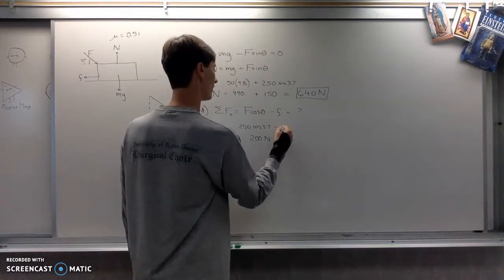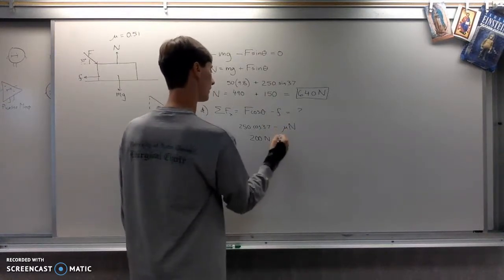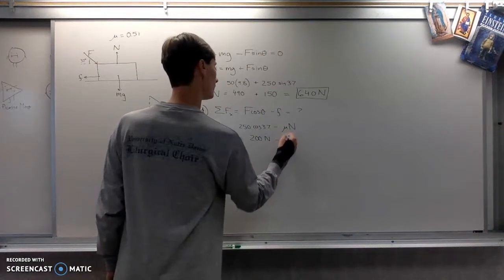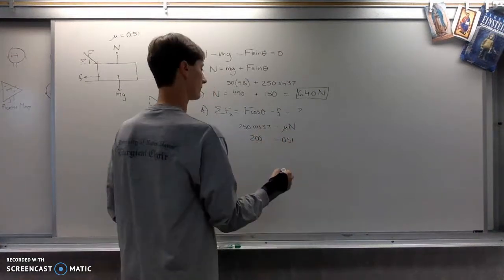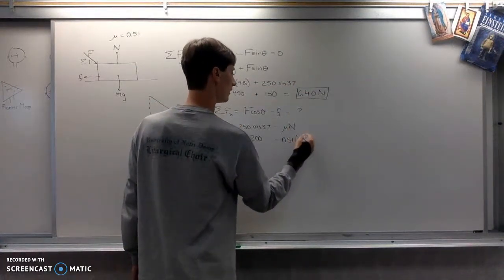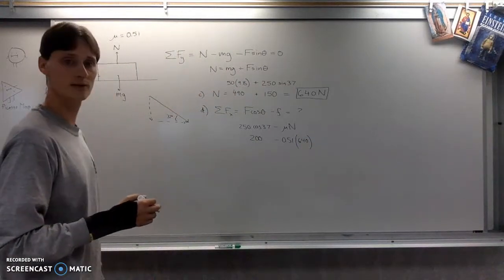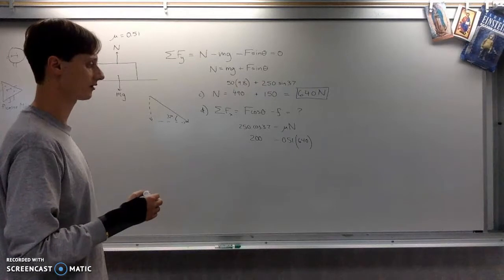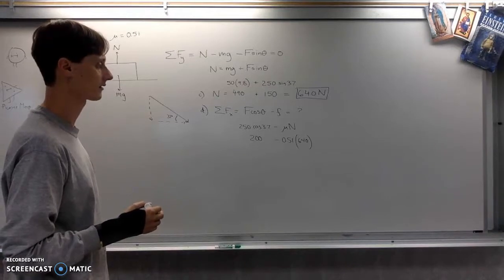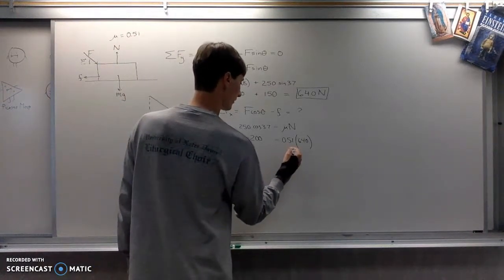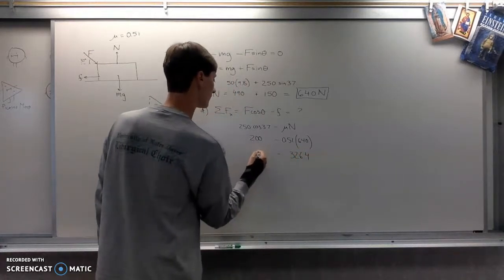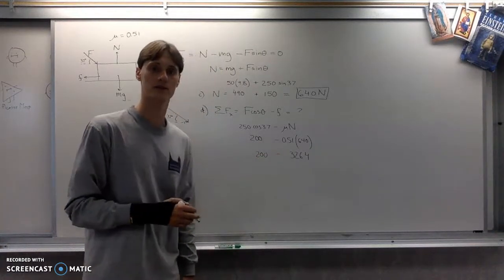And then for the friction force. Friction is mu N. The coefficient of friction was 0.51. And the normal force that we calculated up here was 640. So 0.51 times 640 should be 320 plus 6.4. So 326.4 newtons. Uh-oh. What does that mean? It means it won't move. The couch doesn't budge.